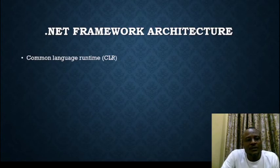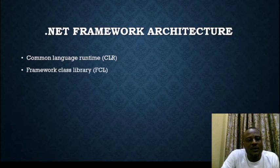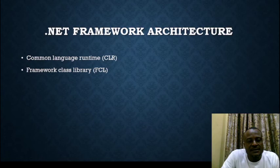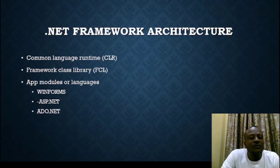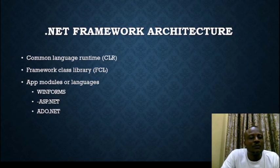Now let's look at the .NET Framework architecture. The architecture includes the Common Language Runtime, which I explained earlier. You also have the Framework Class Library with reusable code snippets. There are also web modules and several languages being used to create two different types of applications. The application types are: Windows Forms (WinForms), ASP.NET, and ADO.NET — each used for something unique within the framework.